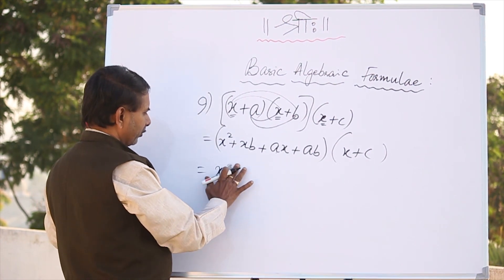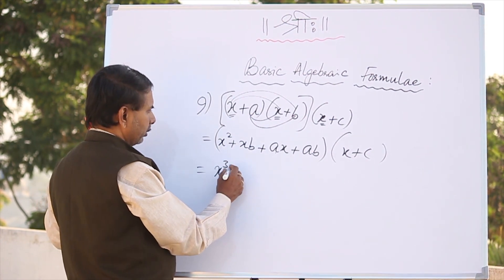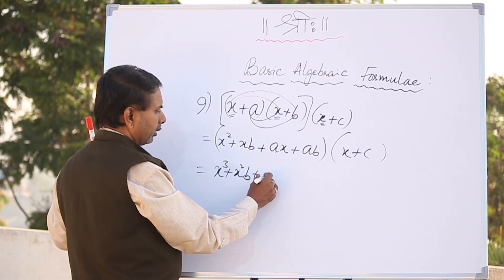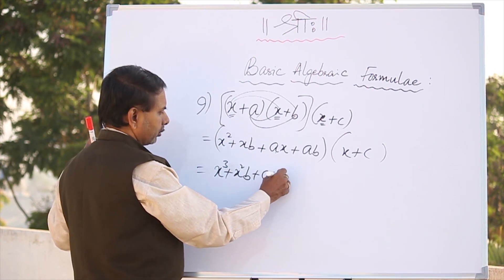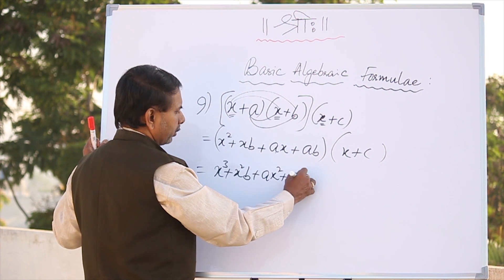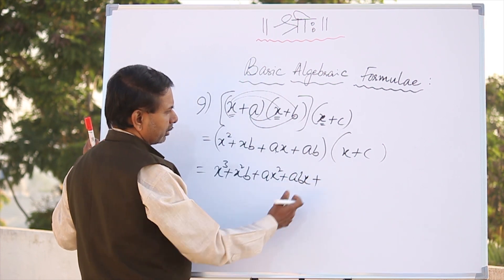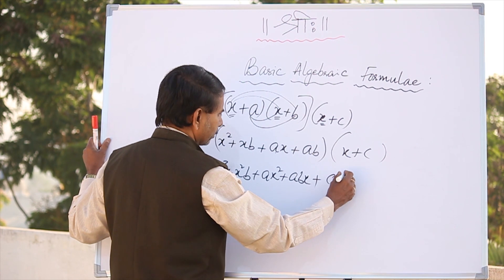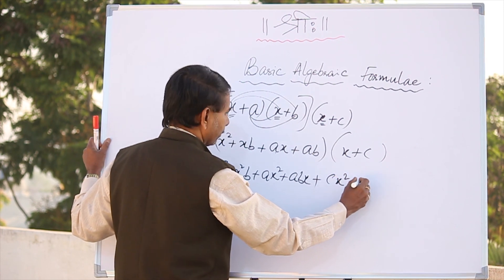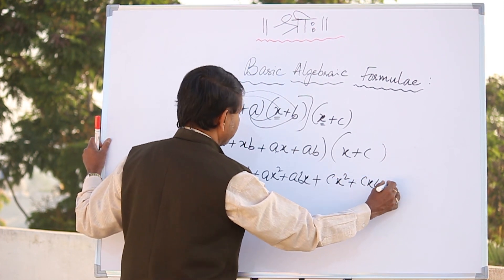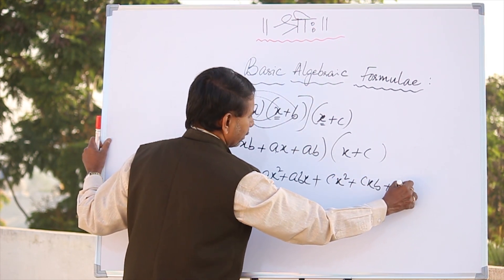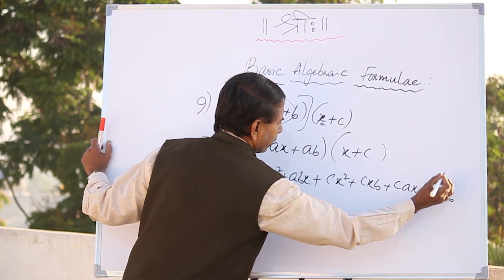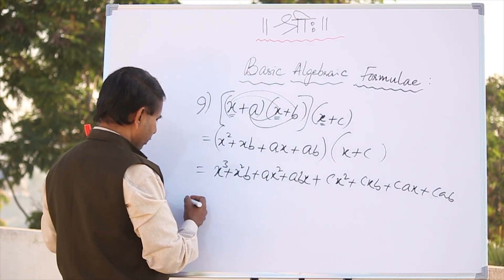x cube. Here is x cube plus x square b plus a x square, plus a b x plus a b x, c x square plus c x b plus c a x plus c a b. Now tell me, who is the bigger person?